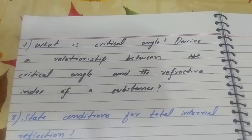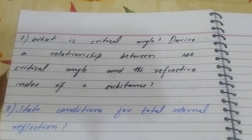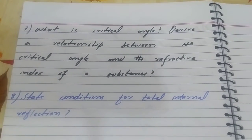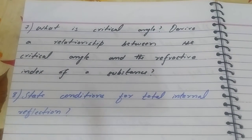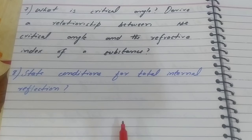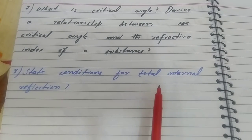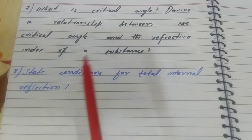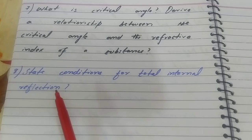Last two questions: Question seven - What is critical angle? Derive relationship between the critical angle and the refractive index of a substance. Question eight: State conditions for total internal reflection. Critical angle and total internal reflection are important topics in Chapter 12 of Geometrical Optics.